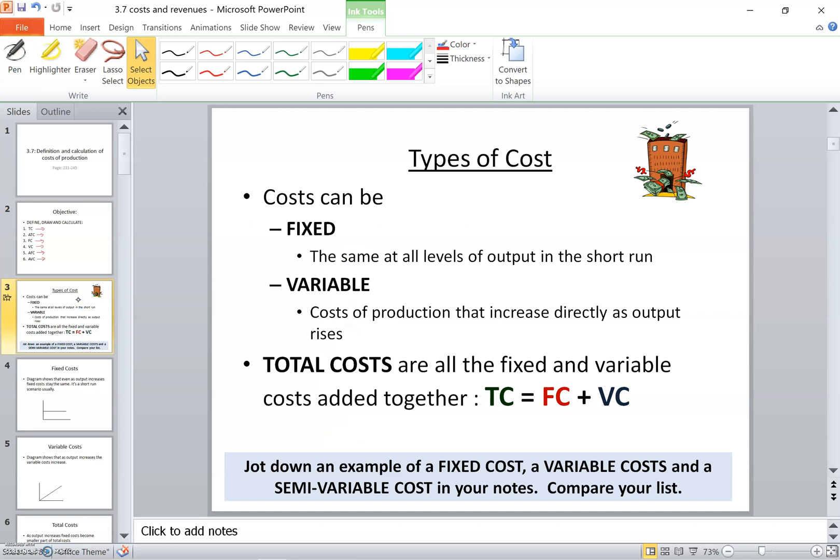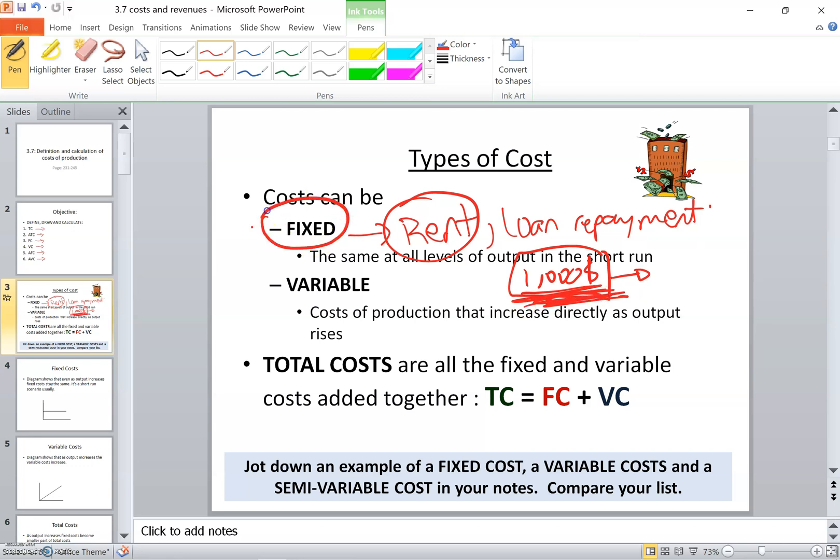Right now we'll start with fixed cost. Fixed costs are costs that are the same no matter what the level of output. Whether the company is producing any units or not, they will have to pay these fixed costs. They do not vary with the number of units produced. For example, it could be rent or loan repayments for the bank. Let's say I pay rent every month for the factory which is $1,000. The owner of the land doesn't care whether I'm producing, making profit, or losing. At the end of the month he wants to see his rent. I have to pay him. So these are examples of fixed costs.